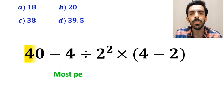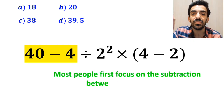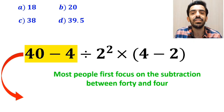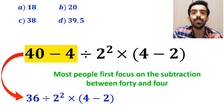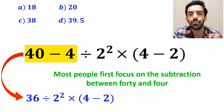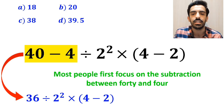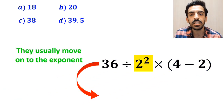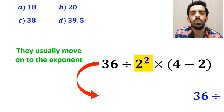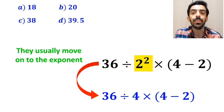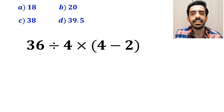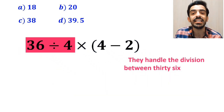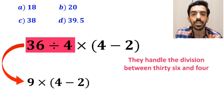To solve this question, most people first focus on the subtraction between 40 and 4 and rewrite the whole expression as 36 divided by 2 squared, then multiplied by (4 minus 2). In the next step, they usually move on to the exponent and simplify the expression to 36 divided by 4, multiplied by (4 minus 2). Then they handle the division between 36 and 4, replacing the expression with 9 multiplied by (4 minus 2).